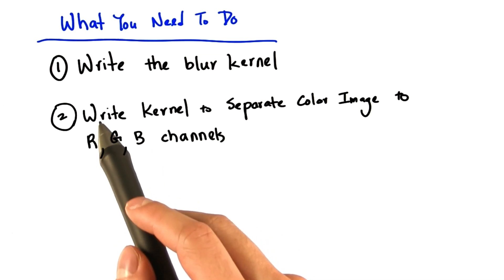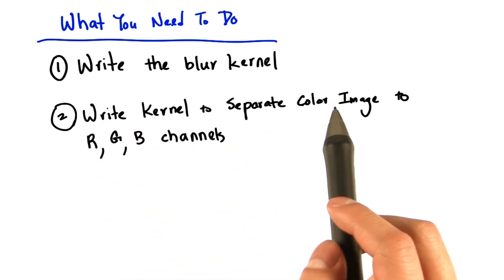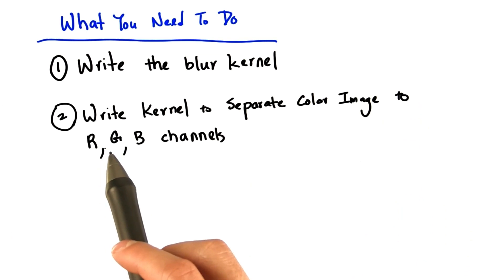Second, you will need to actually write the kernel that separates the color image to its RGB channels.